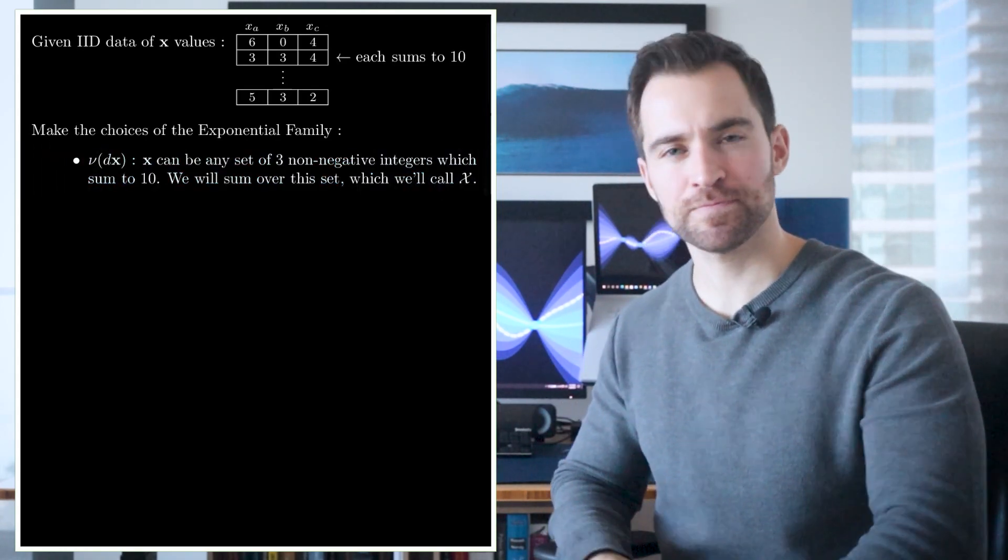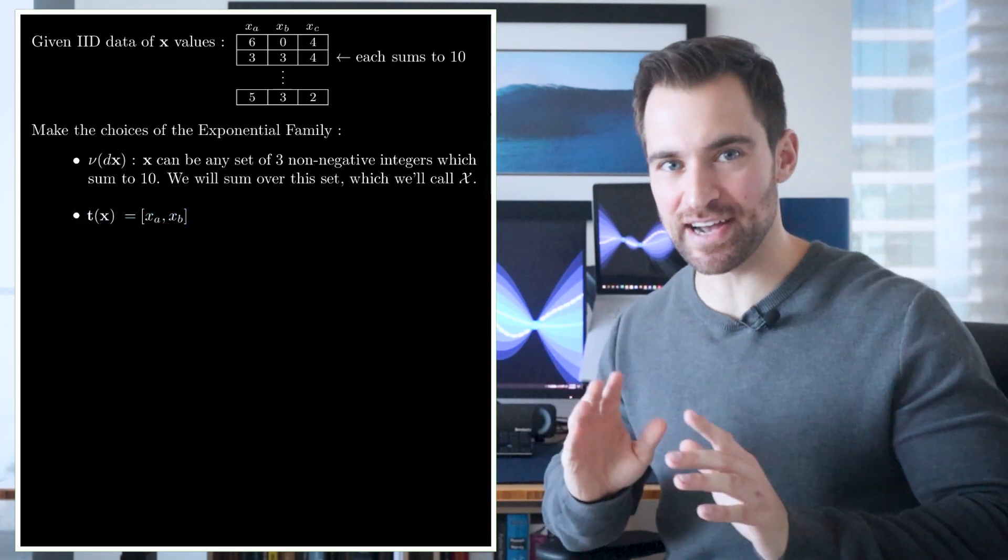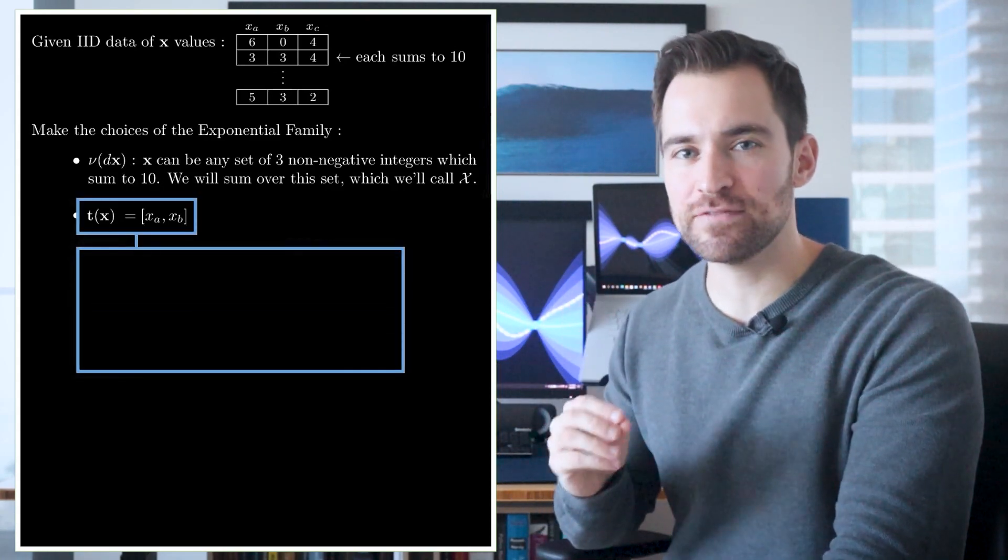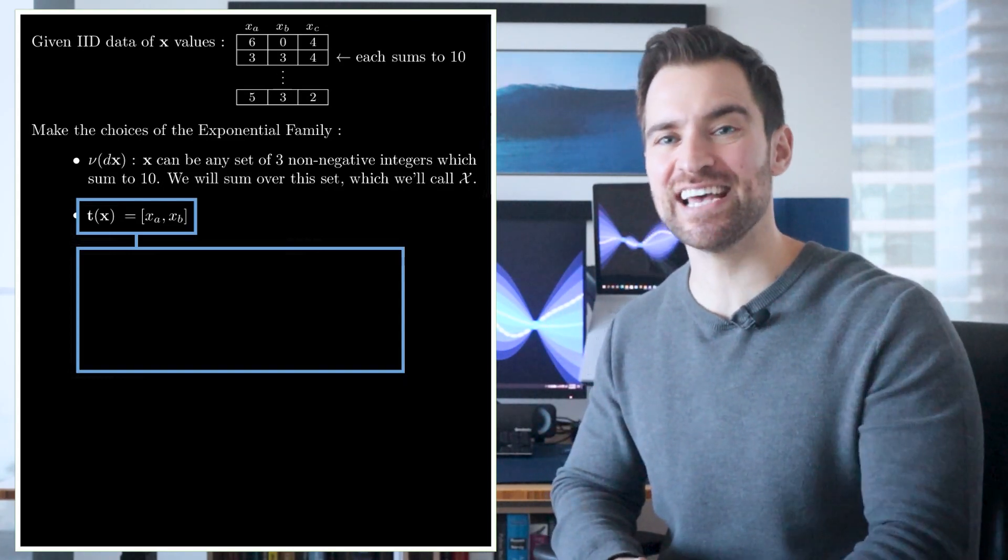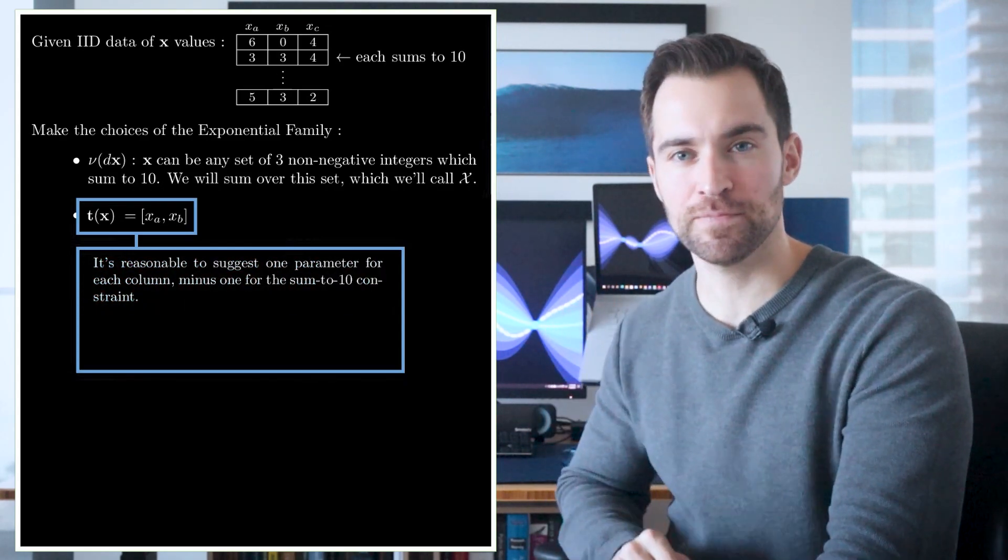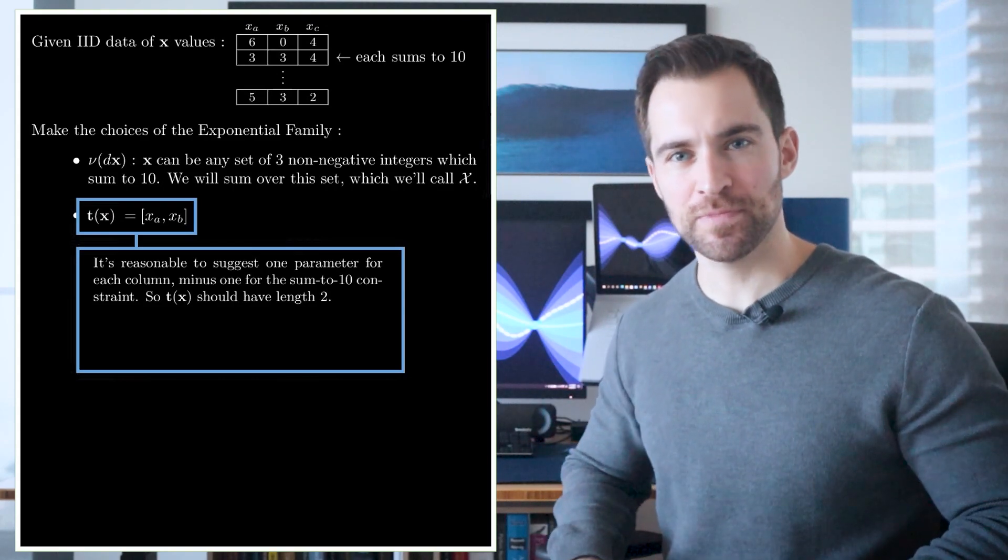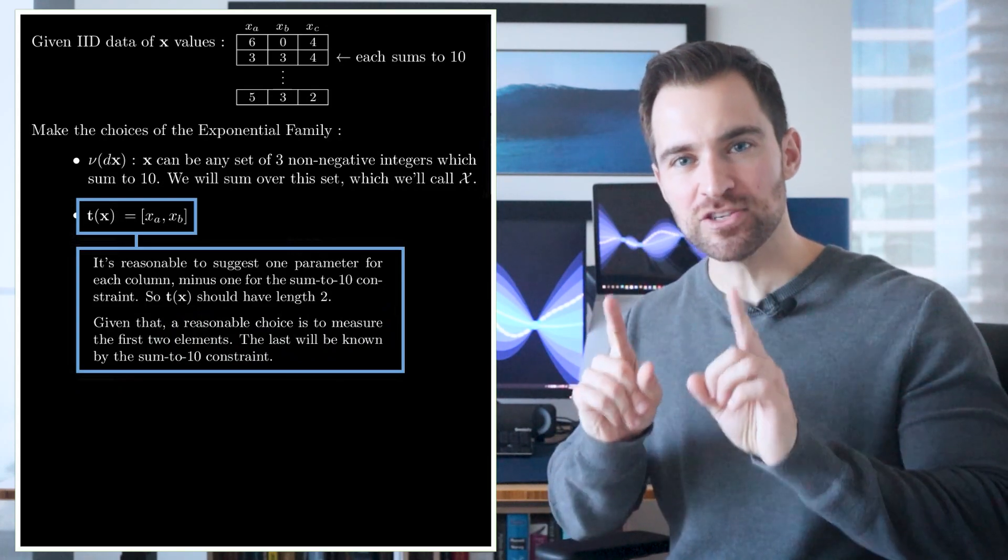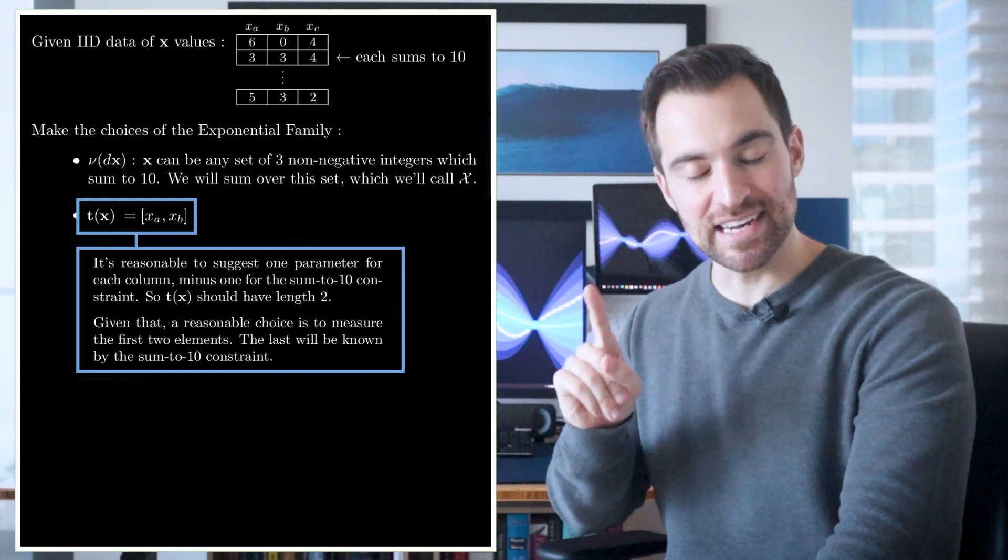But what about our sufficient statistics? Well, it turns out a reasonable choice will be to return the first two elements of x. Here is the reasoning for that. First, we need to determine the length of t of x, which is the same as the number of parameters. Well, one reasonable suggestion is to say that there is one parameter per column, but the sum to 10 constraint will subtract one. So t of x should have length 2. And given it has length 2, what should it measure? Well, all I can think of is to return the first two elements of x. That's okay. The last element will be known implicitly by the sum to 10 constraint. So this is our sufficient statistic.